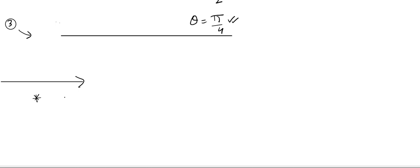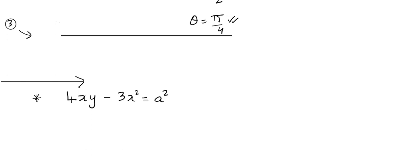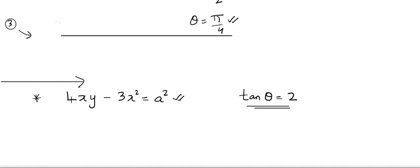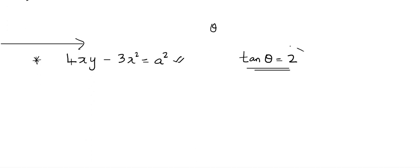One more question that has been asked two or three times: what happens to the equation 4xy − 3x² = a² if the axis is rotated through an angle θ where tan θ = 2? They are asking you to rotate the axis through angle θ, and instead of giving the angle directly, they tell you tan θ = 2.